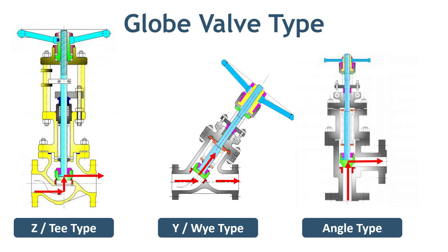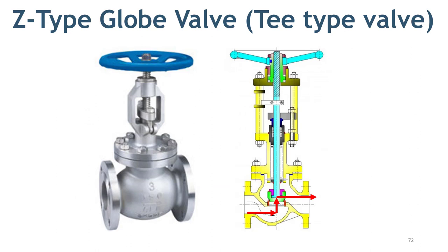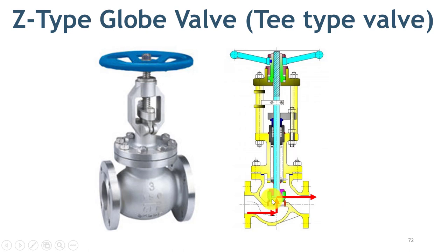On this slide, you can see the three most common types of globe valve used in piping. The first one is Z-type or T-type. This is the one that has a globular body. It is called Z-type because the fluid flows in a Z shape through the valve. The same valve is also called T-type because the disc and seat make a T shape. This type of globe valve is used where pressure drop is not a concern and a high degree of throttling is required.